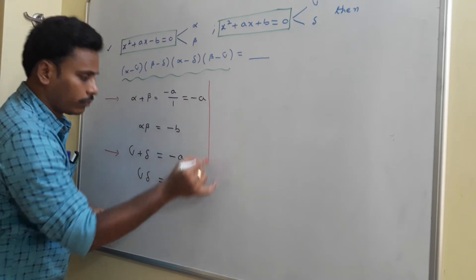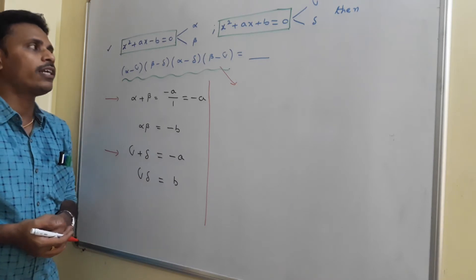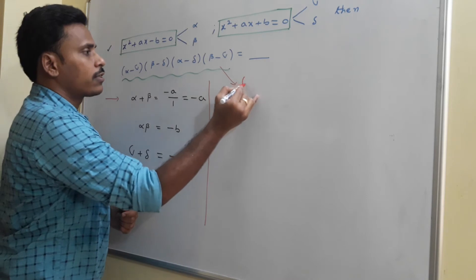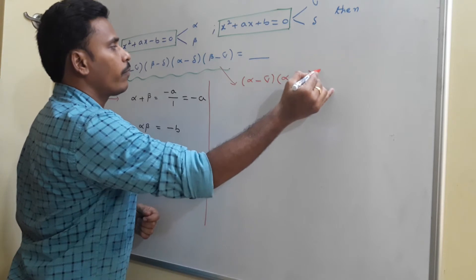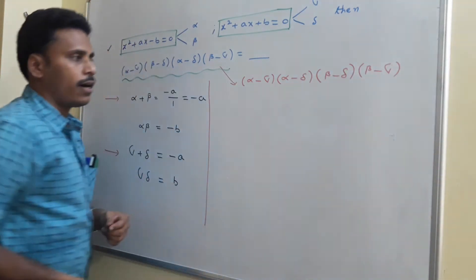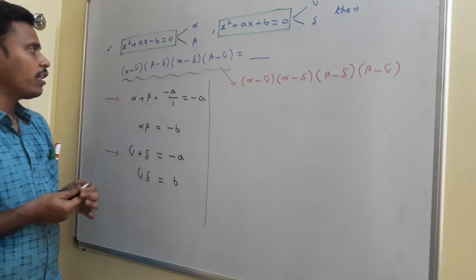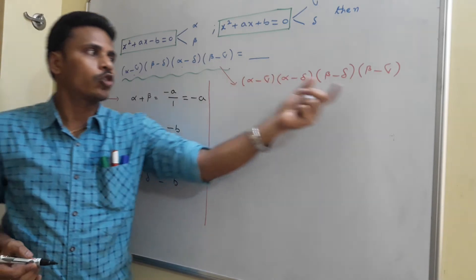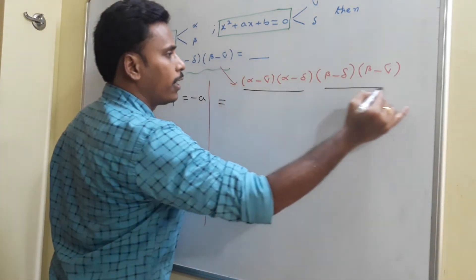We need to multiply all four terms: (alpha minus gamma)(alpha minus delta)(beta minus delta)(beta minus gamma). For convenience, I collect the first and third terms together, and the second and fourth terms together.